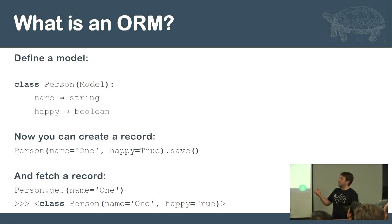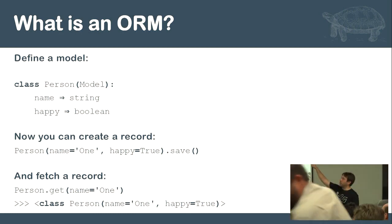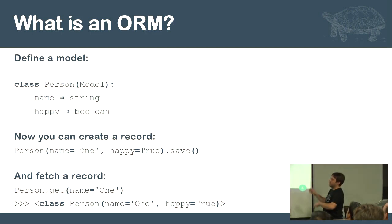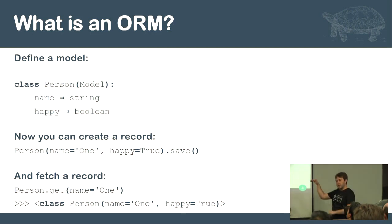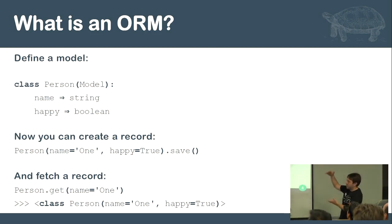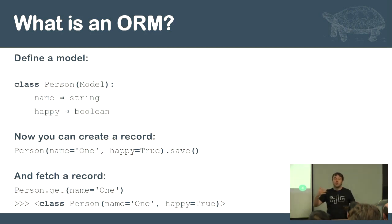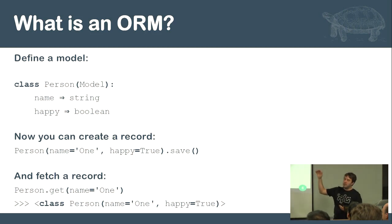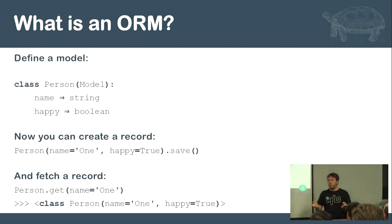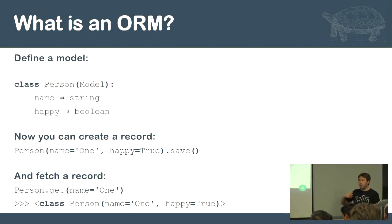A quick summary of what is an ORM — it's a common pattern where you define a model. The model defines something called a name, it's a string, I've got a variable called happy, and it's a boolean. Now I'm going to say name one and happy true and just save it, and it gets persisted. I can kill the program, come back later, it's still there. Later I can say get name one and I get my object back. It wraps data — things often stored in a SQL database, but could be in an object store — and makes it a native code object, a class. I could add extra logic regarding that model that's specific to that model. That's the basics of what an ORM is, and it's a very convenient way of persisting state.